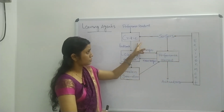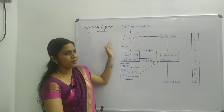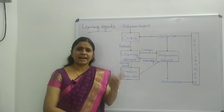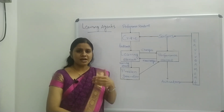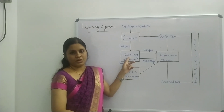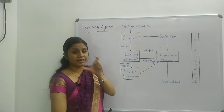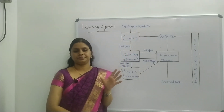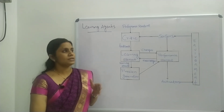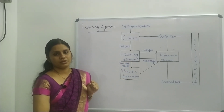The critic determines the outcome of the performance element — that is, the outcome of the action — and gives feedback to the learning element. The critic operates with respect to a fixed performance standard. Based on that standard, it produces the outcome and provides feedback to the learning element.